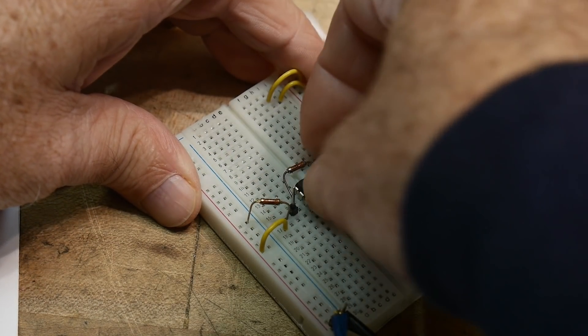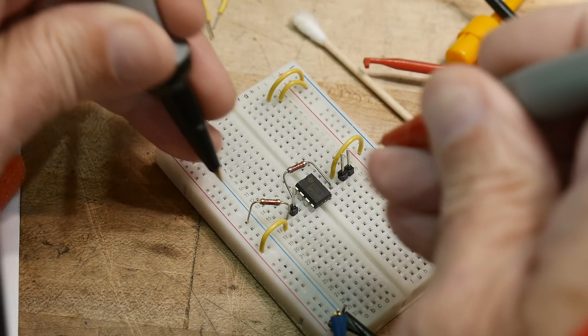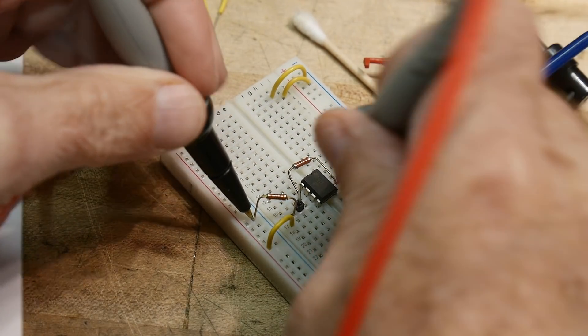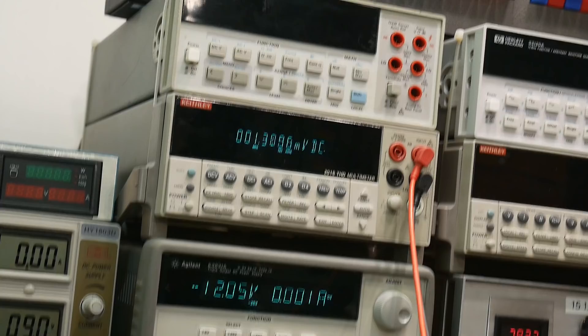Let's measure a different one, see what kind of offset we get on him. And look at that, 1.3 millivolts. Yeah, these are 741s. These are just 741s rebranded.